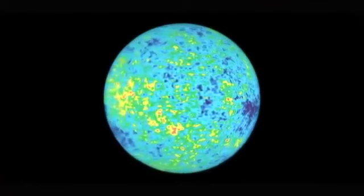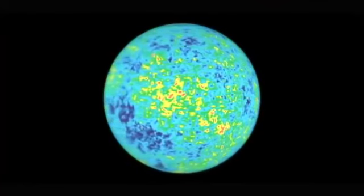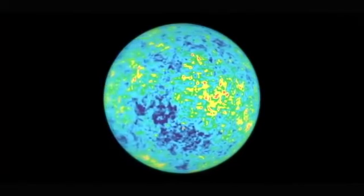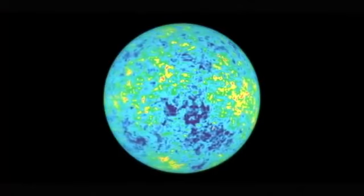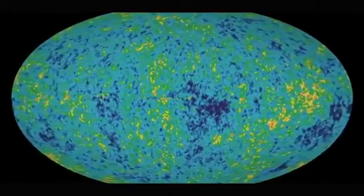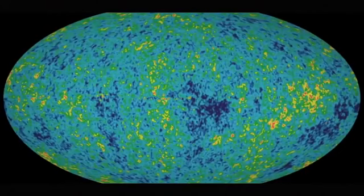This is how the primitive universe looked at 380,000 years old. The red spots show regions of low matter density, while the blue spots indicate high density. We now know how the universe looked 13.7 billion years ago, just before the dark ages.